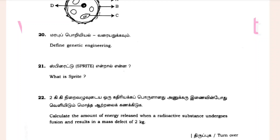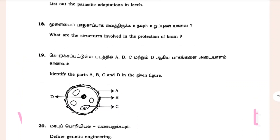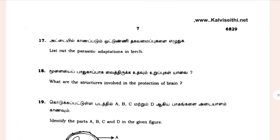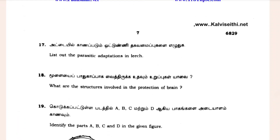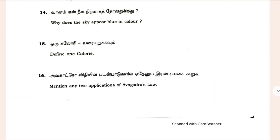Question 21: What is Sprite? Question 22: Define Genetic Engineering. Biology Markets, Parts 18. What is the structure involved in the protection of the brain? Question 18: List out the parasitic adaptation in leech. Question 18: Mention the application of Avogadro's Law — it is very simple and very important. If you want to use the pattern and book, you can use Avogadro's Law.